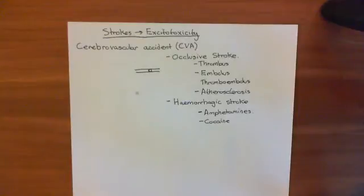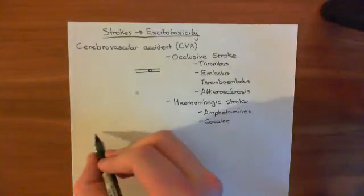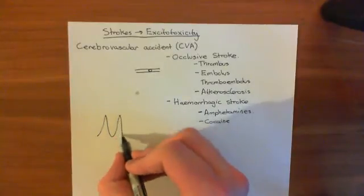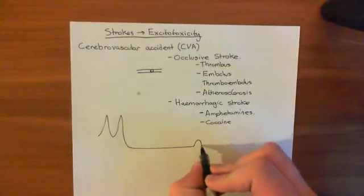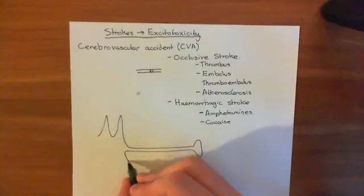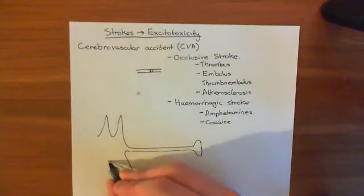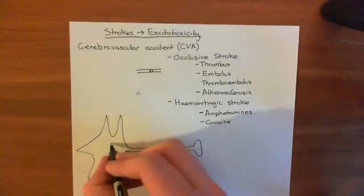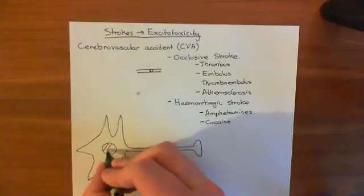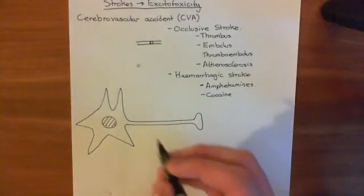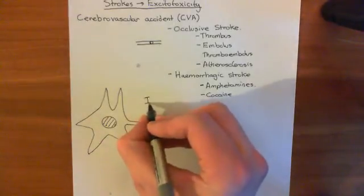The point is that some portion of the brain — some neuron — is not getting enough blood supply. If a neuron doesn't get enough blood supply, what is going to happen? Let's draw our neuron here, with its axon terminal, axon, and dendrites. If this neuron is getting too little blood, then we say that it's ischemic. Ischemic just means that you're getting too little blood.